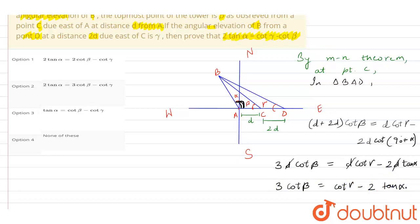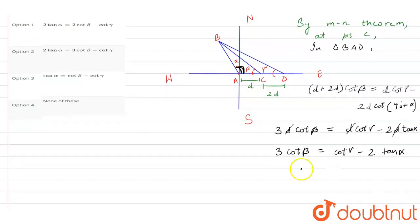So after rearranging these terms, we will be getting 2 tan alpha equals 3 cot beta minus cot gamma. So we have got this answer.